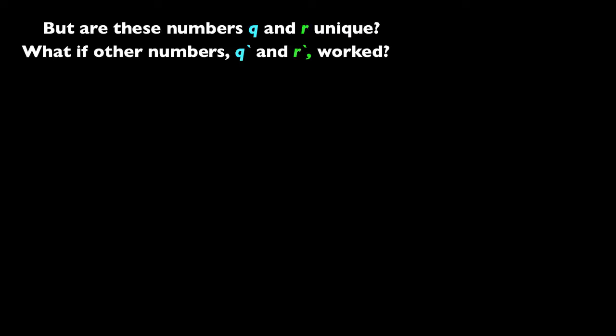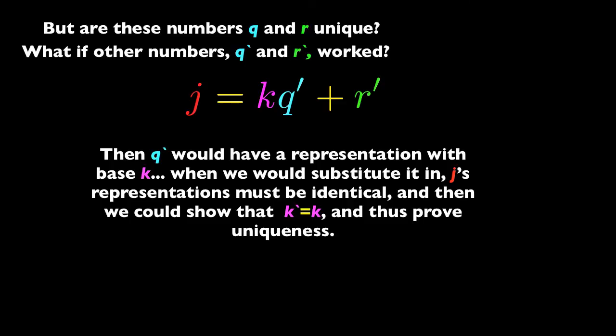rather than write everything out. So this is what it would look like if we had another q and an r that worked. So j is equal to kq prime plus r prime. Then q prime would have a representation in base k, because any number has a representation. We could plug that representation in for q, and then using the fact that j's representations all must be identical,